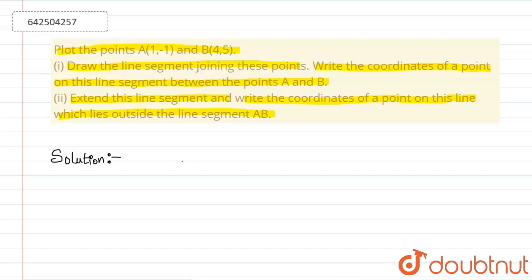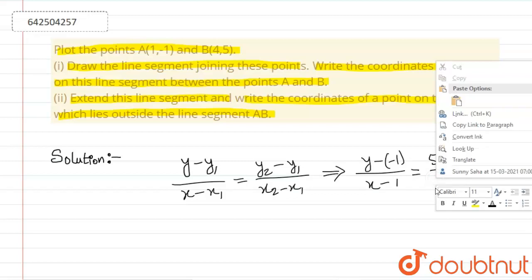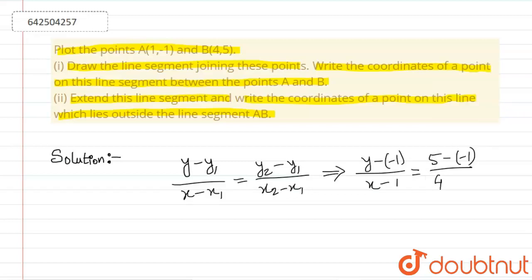Let's find the equation of line AB using coordinate geometry. We use the two-point form: (y - y1) / (y2 - y1) = (x - x1) / (x2 - x1). Substituting the values: (y - (-1)) / (5 - (-1)) = (x - 1) / (4 - 1), which gives (y + 1) / 6 = (x - 1) / 3.